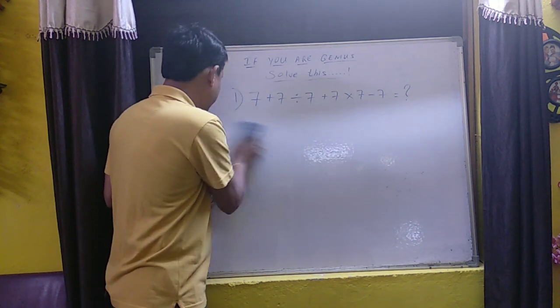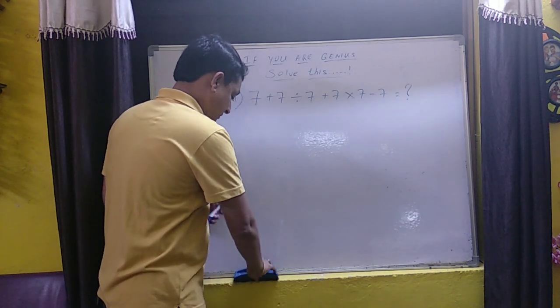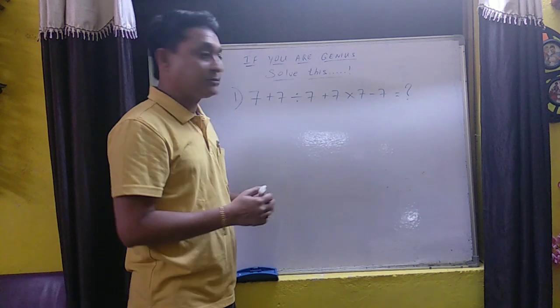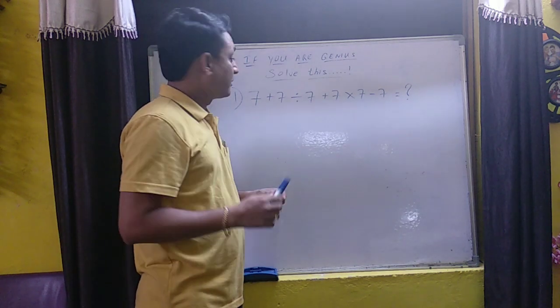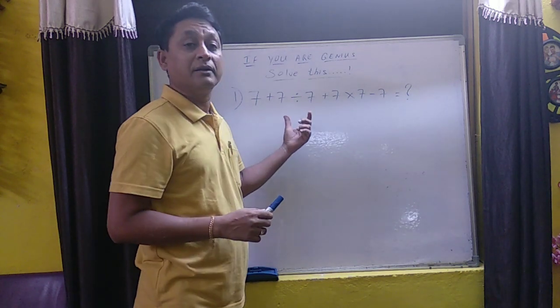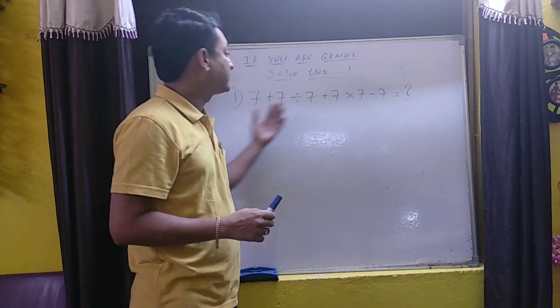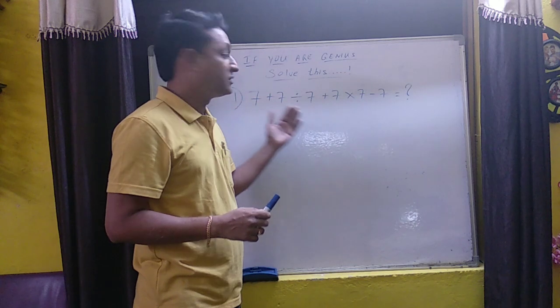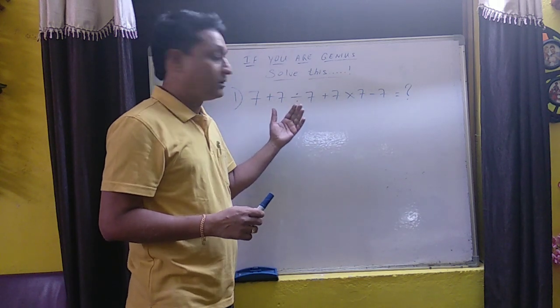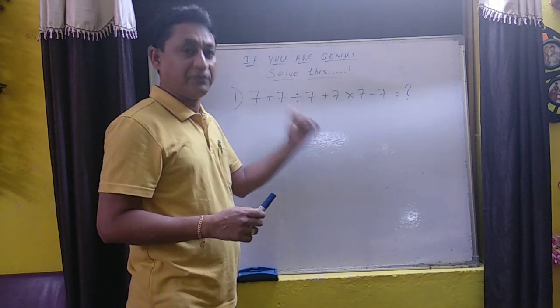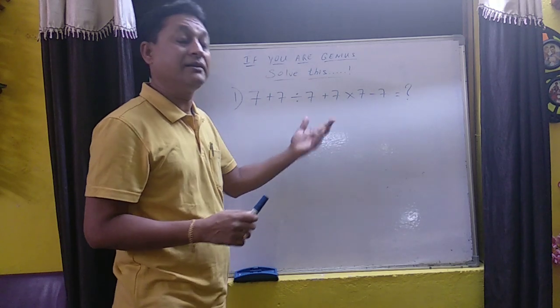I hope you people will enjoy this. Mathematics is there to enjoy. So as per BODMAS, the first rule says we have to go with brackets. We can see clearly we don't have any brackets here. And next is order, we don't have any exponential or under root over here. So the next one is division, then multiplication, then addition and then subtraction.